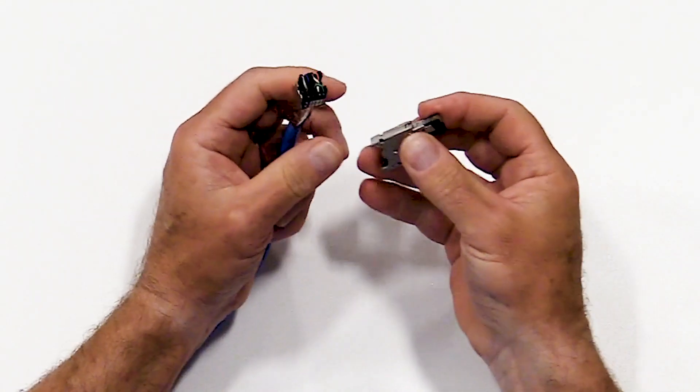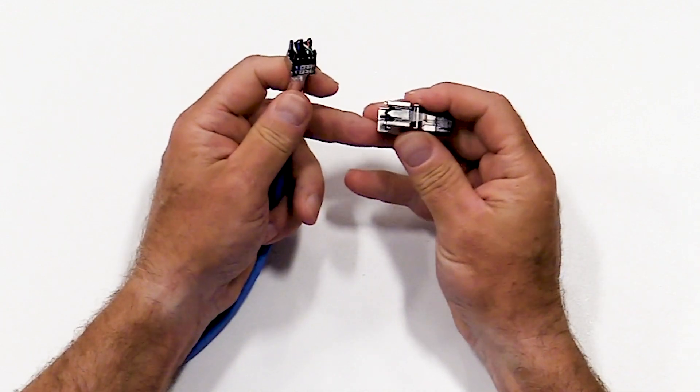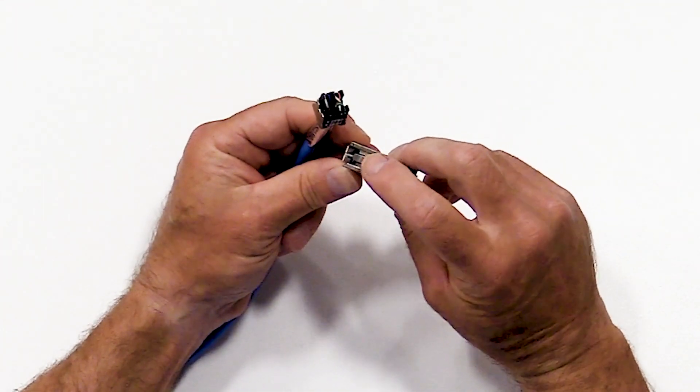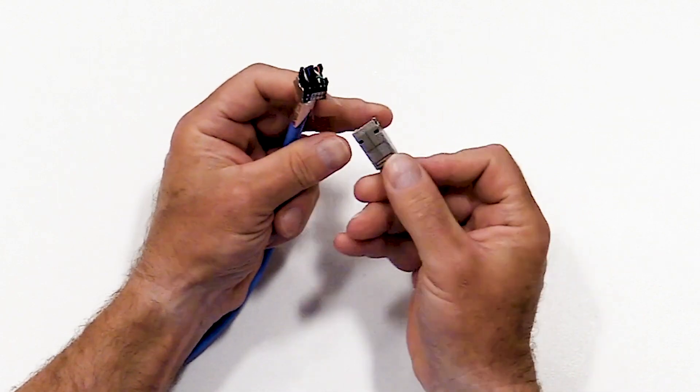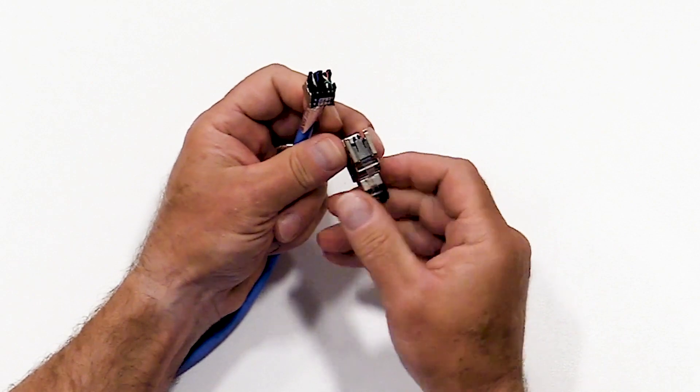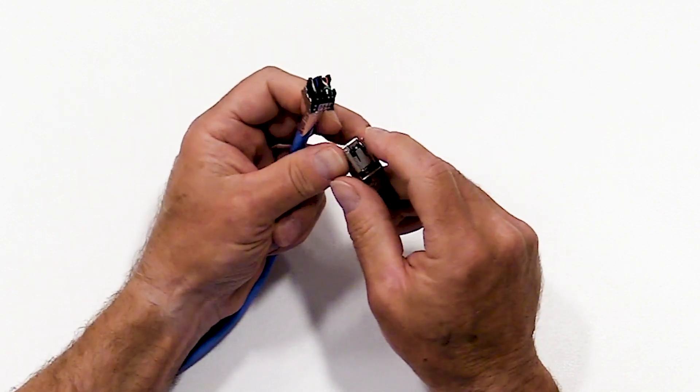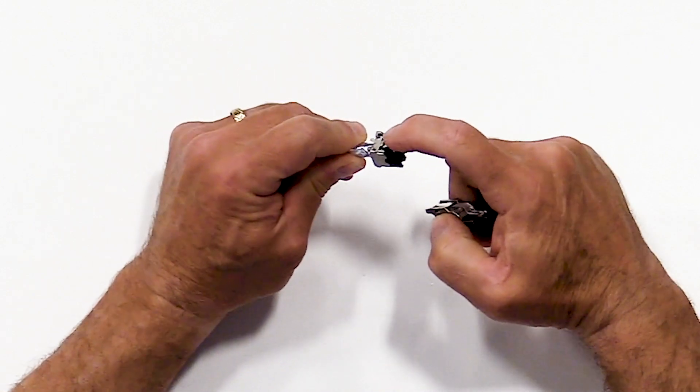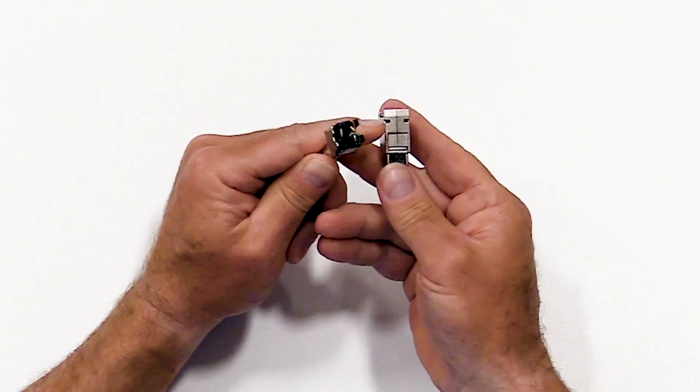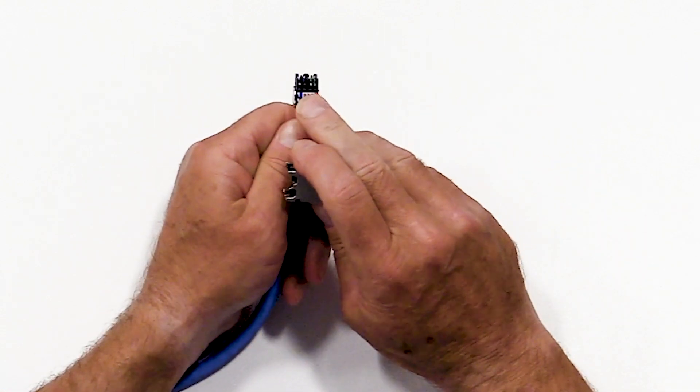Taking the plug itself, you'll notice there's a latched side and there's a flat side of the plug. The latched side lines up with the latch portion of the wire cap. The flat side of the plug lines up with the color code or the flat side of the wire cap.